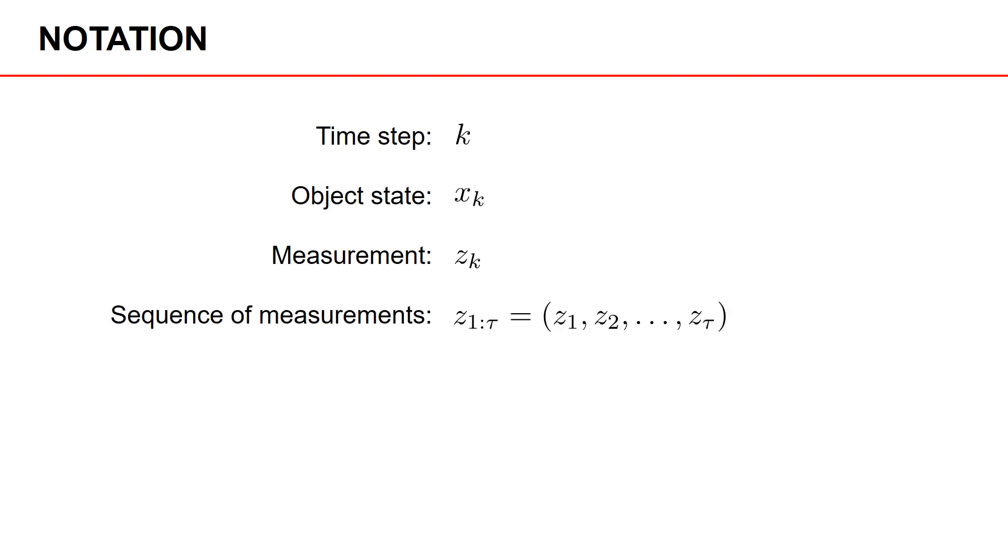Since we're going to track objects over time, we need to denote the sequence of measurements. We do that by using z again, but this time with a subscript index that spans from some initial time step to some final or latest time. Here the sequence starts at time step one, and we have measurements up to and including time step tau.